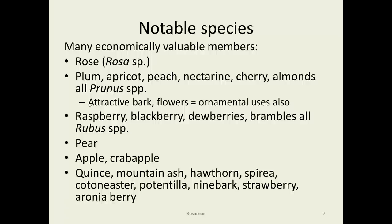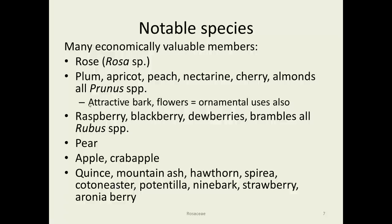Notable species: there are many economically valuable members. The rose, of course, is enormous both in landscaping and floral uses. Plums, apricots, peaches, nectarines, cherries, and almonds are all in the Prunus genus. Their attractive bark and flowers mean they're also used for ornamental purposes in addition to fruit production. The Rubus genus has all the brambles, blackberries, and raspberries. Pear is in the Pyrus genus. Apples and crabapples are in the Malus genus. Additionally, there's quince, mountain ash, hawthorns, spireas, cotoneaster, potentilla, ninebark, and strawberries. Aronia berries are being used more and more commercially for production of juice for sweetening beverages, as people want to move away from corn syrup.